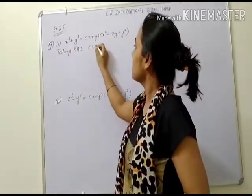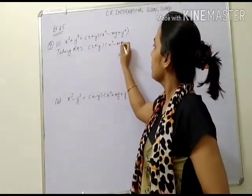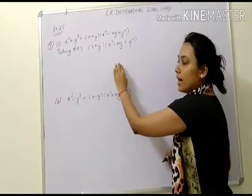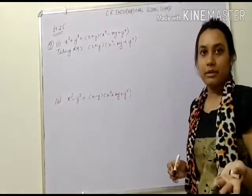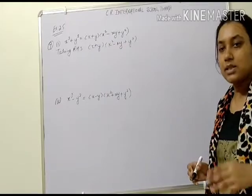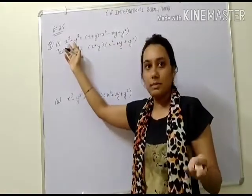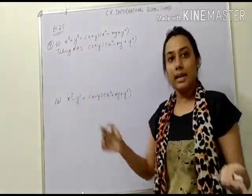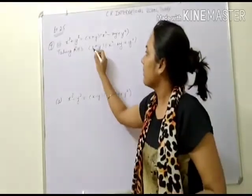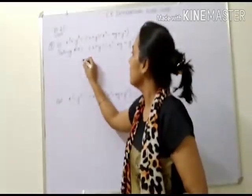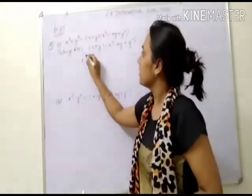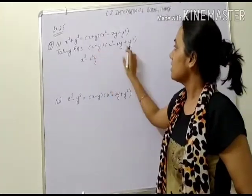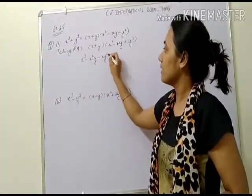RHS is equal to x plus y, into x squared minus xy plus y squared. Now multiply this value. If LHS is equal to RHS, it will be verified. x into x squared minus xy plus y squared gives x cubed minus x squared y plus xy squared.